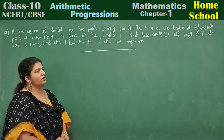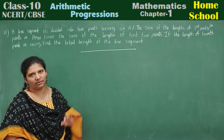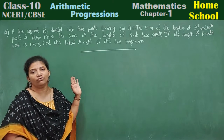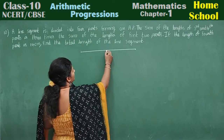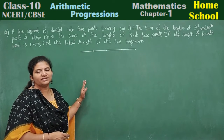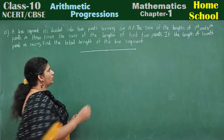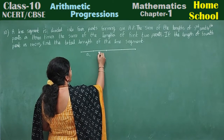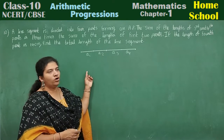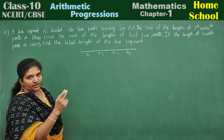Let me take this line segment. The line segment is divided into four parts — look here: one, two, three, four parts. These four parts are in AP, so let us mark these four parts as a1, a2, a3, a4 — first part, second part, third part, fourth part.